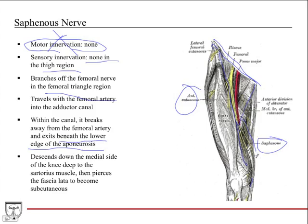You can see it descending down the medial side of the knee, just deep to the sartorius muscle. Then it pierces the fascia lata — that thick fascia encasing the thigh — and becomes subcutaneous, traveling just below the skin to carry on cutaneous sensory innervation in the leg and ankle region.